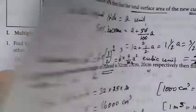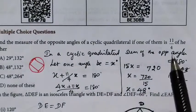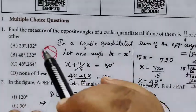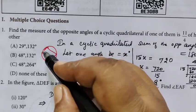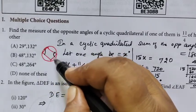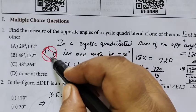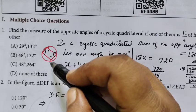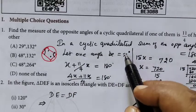Find the measures of the opposite angles of a cyclic quadrilateral if one of them is 11 by 4 of the other. We know the property of a cyclic quadrilateral: the sum of the opposite angles is 180 degrees.